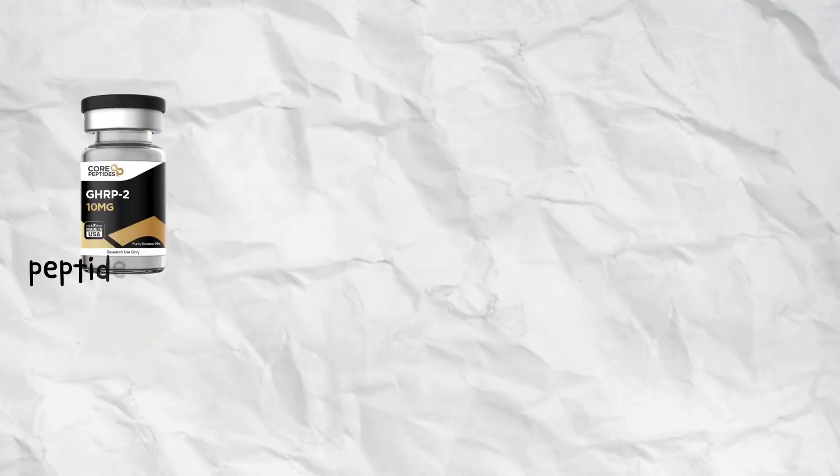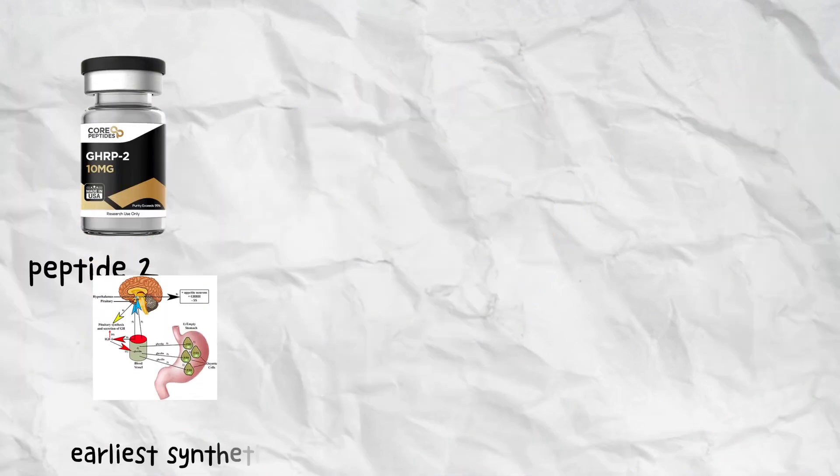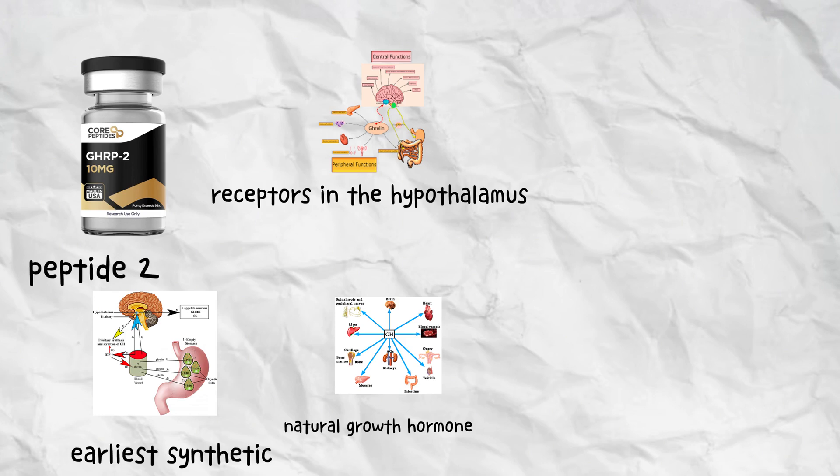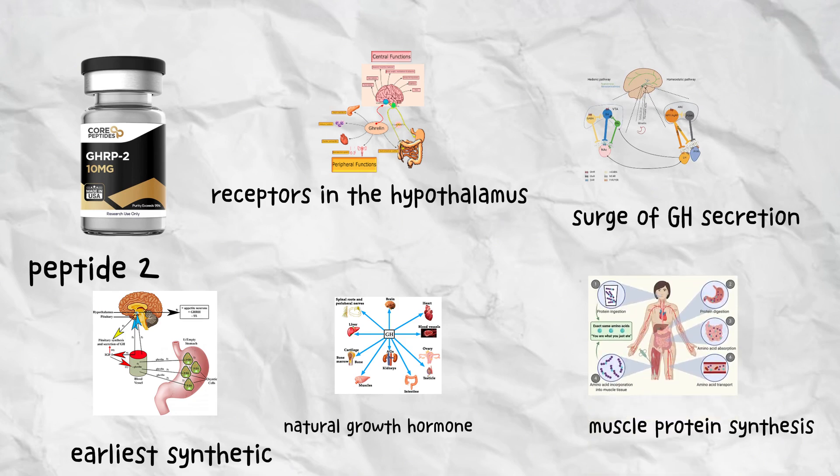GHRP-2, growth hormone-releasing peptide 2, is one of the earliest synthetic peptides created to trigger natural growth hormone release. It binds to ghrelin receptors in the hypothalamus and pituitary gland, prompting a sharp short-term surge of GH secretion. This rise stimulates muscle protein synthesis, recovery, and fat metabolism while also supporting connective tissue repair.